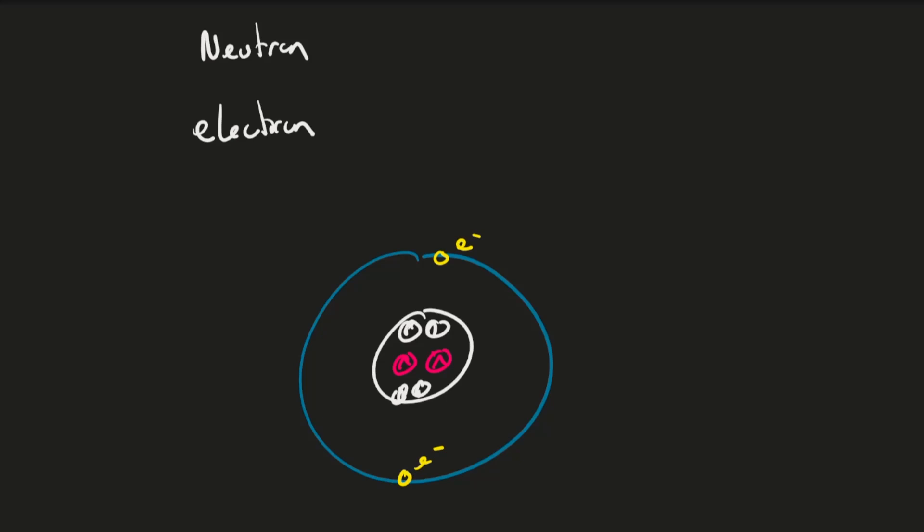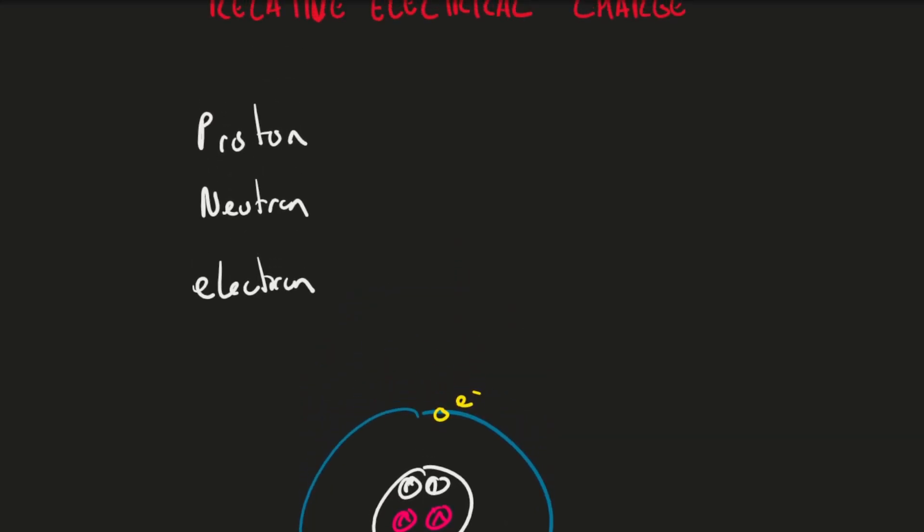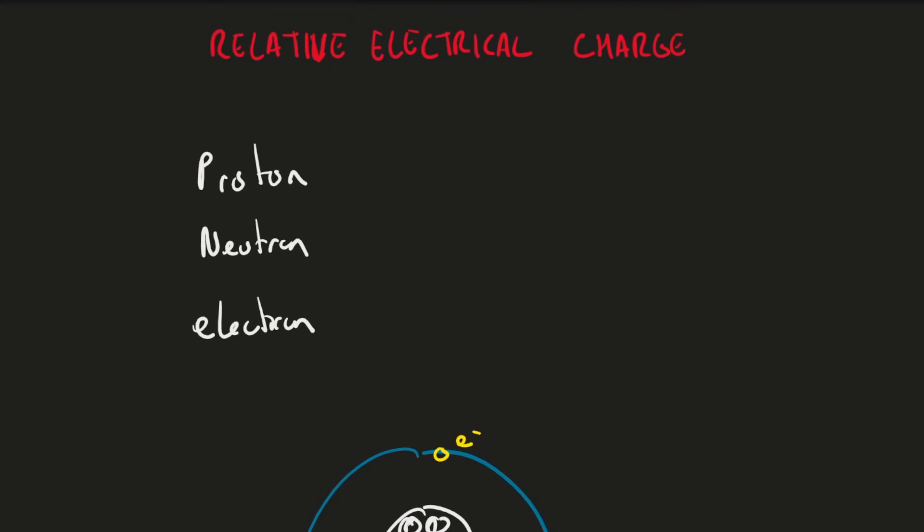Protons have a positive charge, neutrons have a neutral charge, and electrons have a negative charge. They have a charge we can measure in coulombs, but because the numbers tend to be very small, we introduce this concept of relative charge where we say the proton has a charge of plus one.